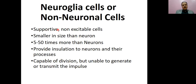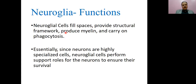Neuroglial cells are supportive, non-excitable cells. They are smaller in size than neurons but many times more numerous — approximately 5 to 50 times. They provide insulation to neurons and their processes. They are capable of division but unable to generate or transmit impulses. They produce myelin sheath and carry on phagocytosis. Since neurons are highly specialized cells, glial cells perform support roles for neurons to ensure their survival.